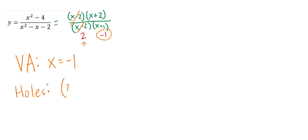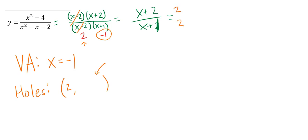I have a hole at 2 comma something because after canceling, 2 is no longer an excluded value. The way I get the y-value is I plug 2 into what's left over — I plug 2 into x plus 2 over x plus 1. If I plug a 2 into that, I get 2 plus 2 over 2 plus 1, which is 4 over 3. My hole is at 2 comma 4 thirds.